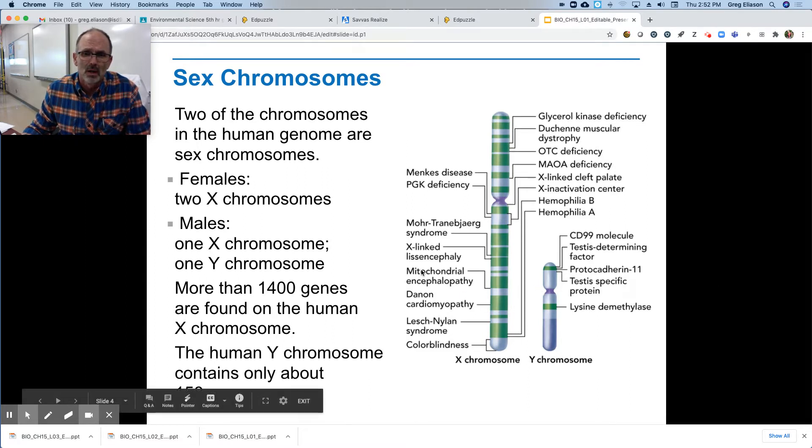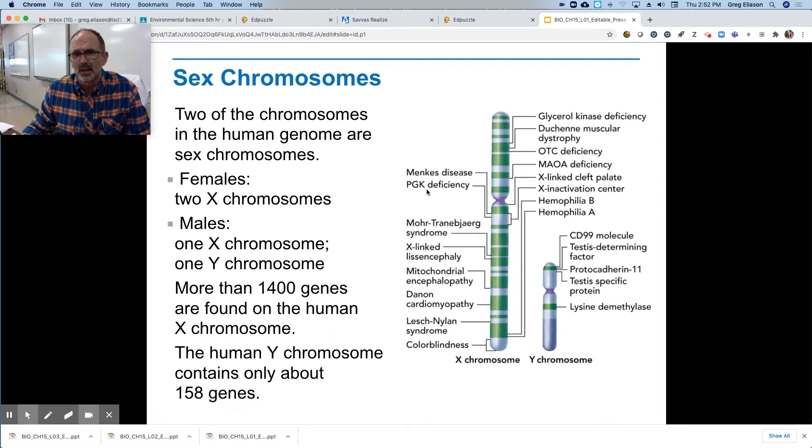There's a mitochondrial disorder. PGK deficiency. Color blindness is right. And what they're doing is they're locating. This is called a gene map, okay?